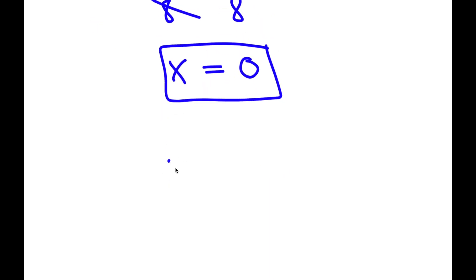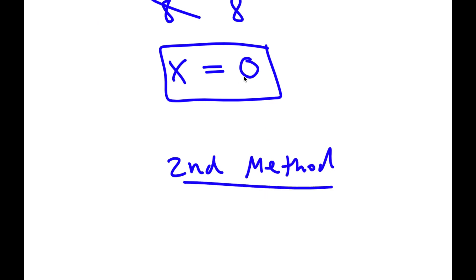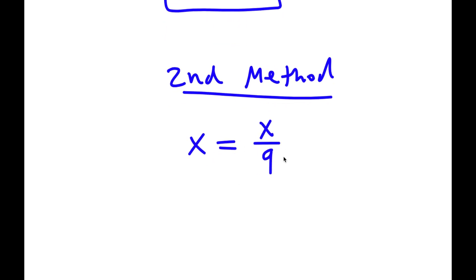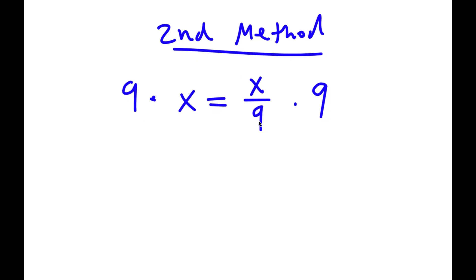I also have a second method to solve this problem, and this is actually an easier method. My initial problem was x is equal to x over 9. This time, instead of subtracting x over 9 on both sides, I can simply start by multiplying 9 on both sides. These two automatically cancel out, and 9 times x is 9x, so I have 9x is equal to x.